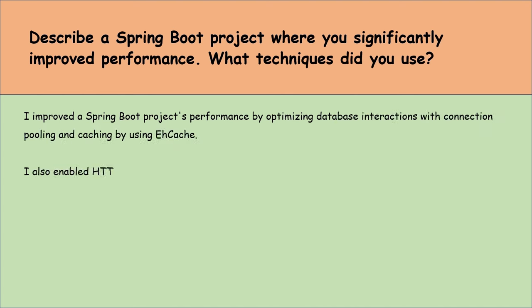How does Spring Boot simplify the management of application secrets and sensitive configurations, especially when deployed in different environments? Spring Boot helps manage application secrets by allowing configuration to be externalized and kept separate from the code. This means we can use properties files, YAML files, environment variables and command-line arguments to adjust settings for different environments like development, testing, and production. For sensitive data, Spring Boot can integrate with systems like Spring Cloud Config Server or HashiCorp Vault, which securely stores and provides access to secrets, enhancing security and flexibility across various deployment environments.